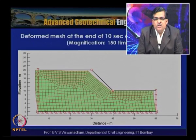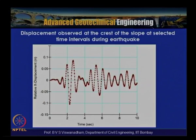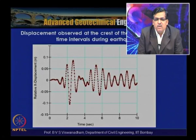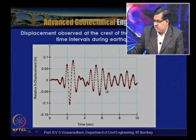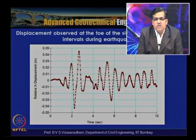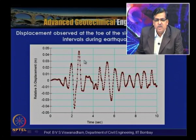The deformed mesh at the end of 10 seconds of earthquake loading is shown, magnified by 150 times, confirming the slope underwent deformation. Crest displacements ranged from −0.1 to +0.1 meters due to ground motion, while toe displacements ranged from approximately −0.04 to +0.04 meters, as computed by the Quake W module.